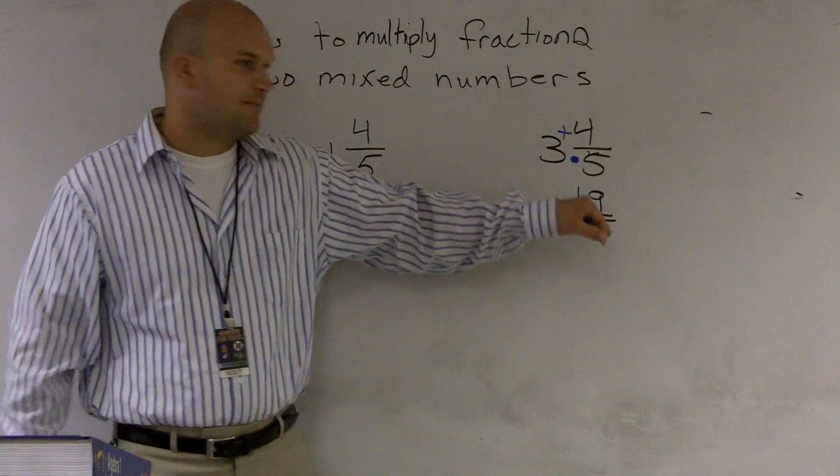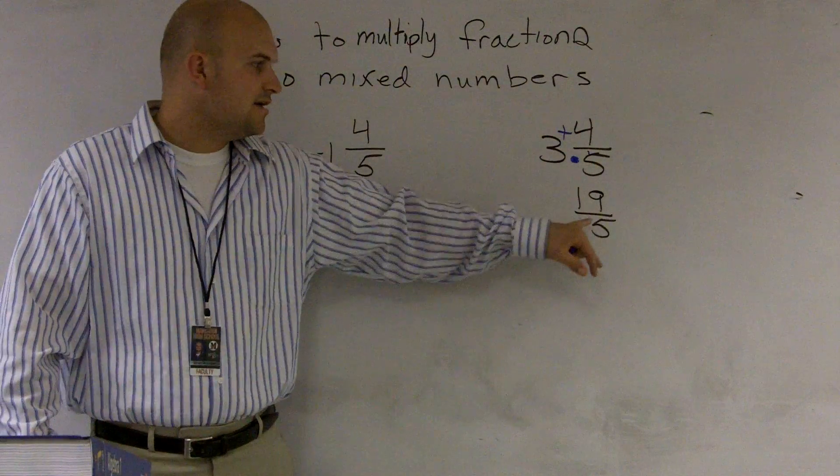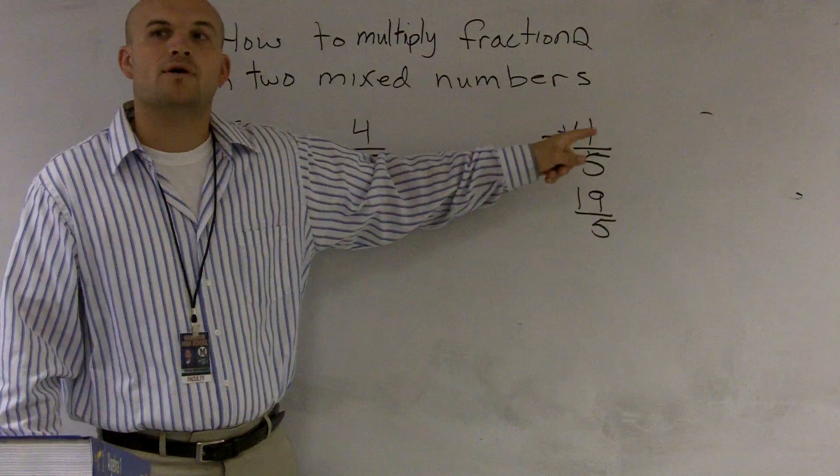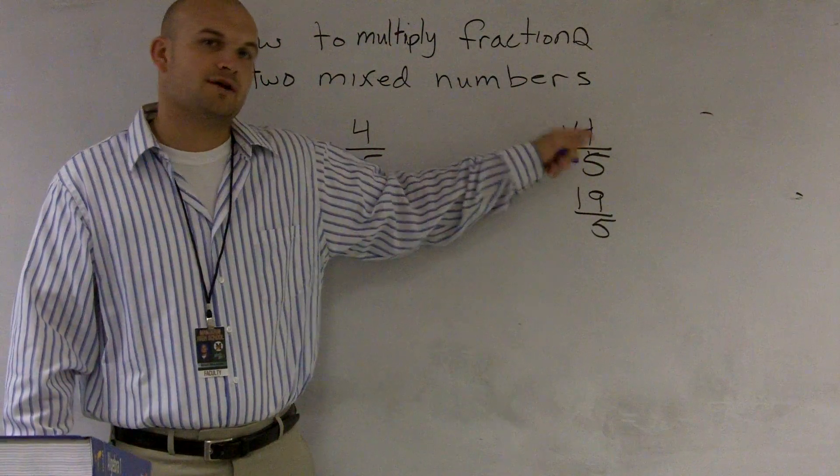Therefore, I have obtained now my improper fraction. And what that means is five goes into 19 how many times? Three times, which is our whole, with the remainder of four. So that's where the improper fraction and the mixed number are related.